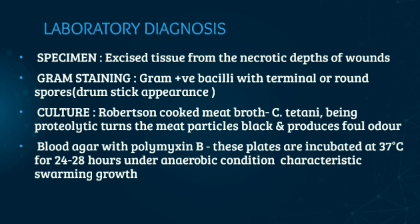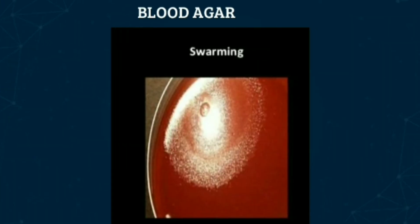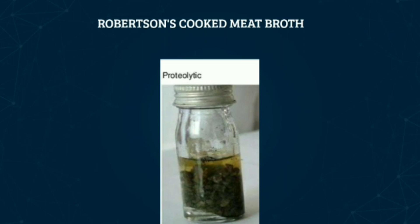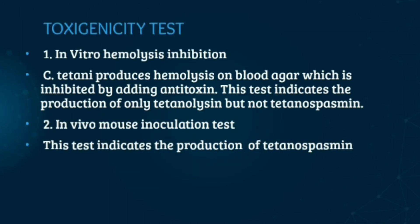Let's see the toxigenicity test. Toxigenicity can be detected by both in vitro and in vivo methods. We perform the toxigenicity test because the pathogenesis of tetanus is toxin-mediated, so the association of the isolated organism can only be established when its toxin production is demonstrated. In short, toxigenicity testing is aimed to determine the presence of toxin production.